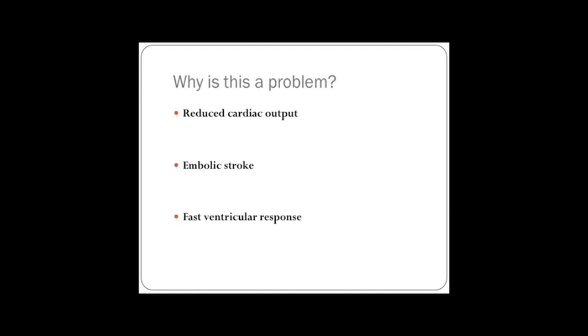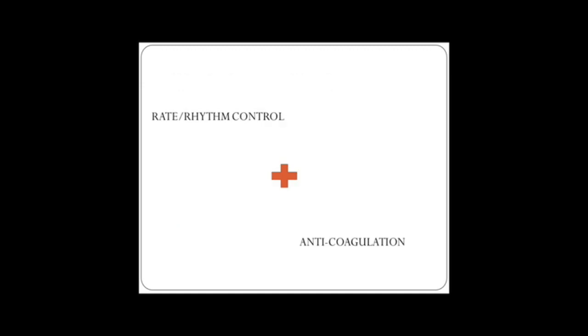The other problem, of course, is a tachycardia. As I said, a fast ventricular response can increase oxygen demand of the myocardium, and some patients can't really cope with that. Two important concepts in atrial fibrillation: Rate versus rhythm control is one, and the other one is anticoagulation. Those are the two cornerstones of the management of atrial fibrillation.